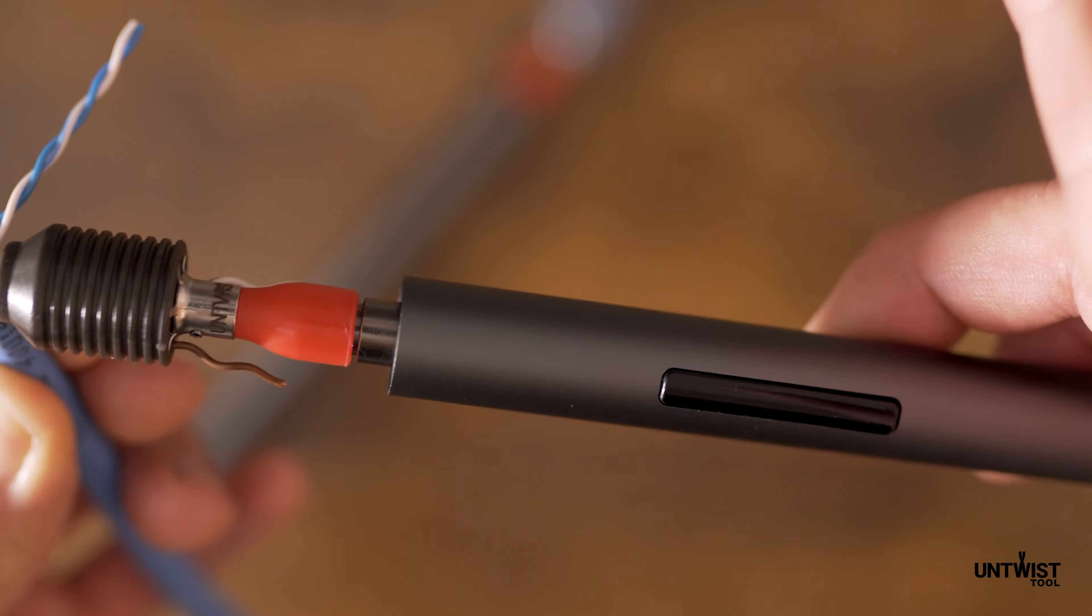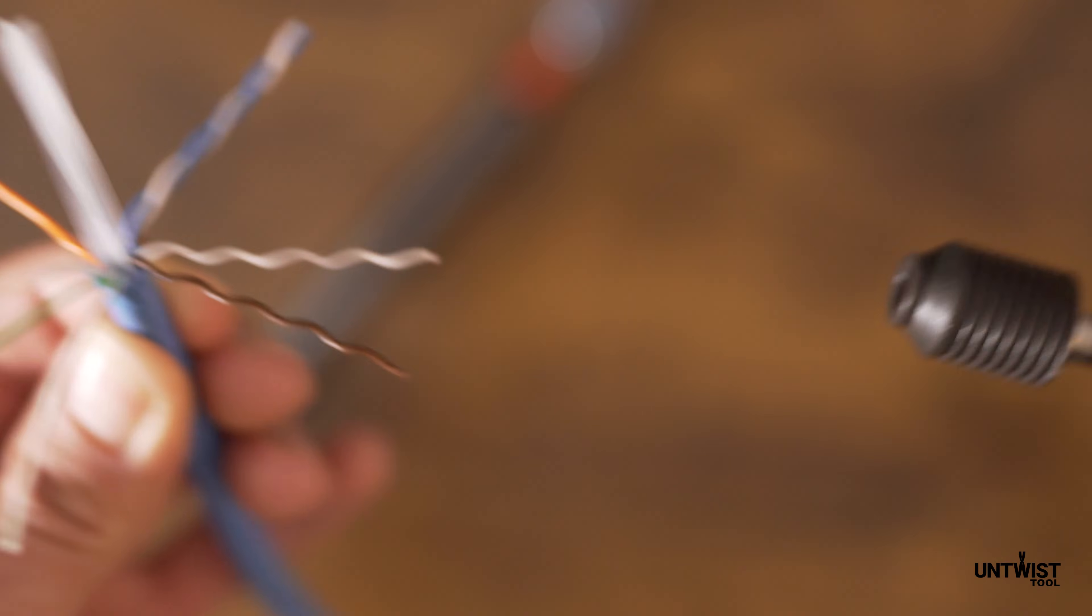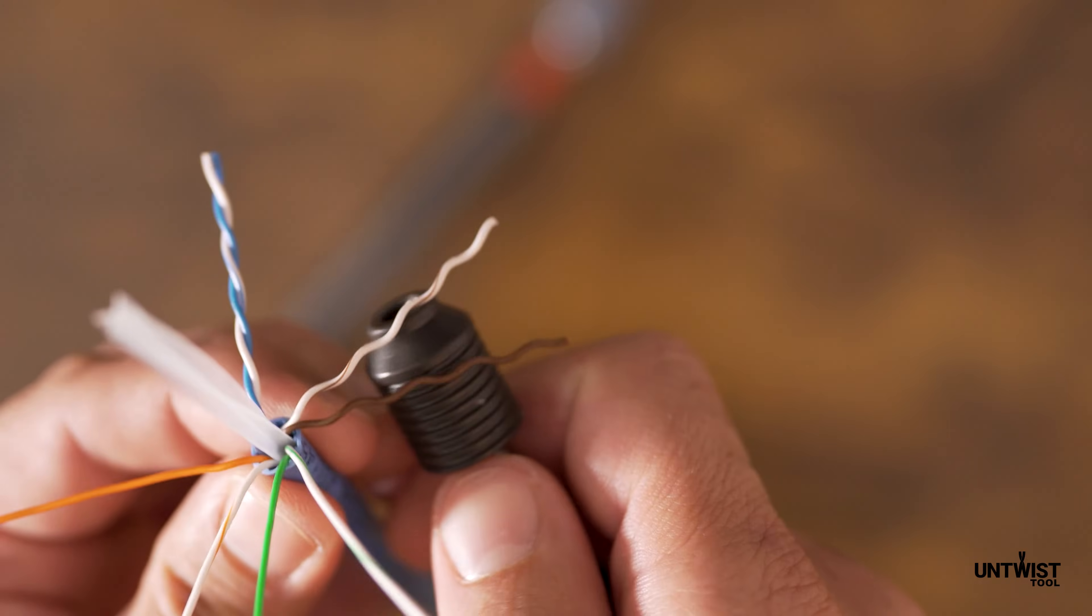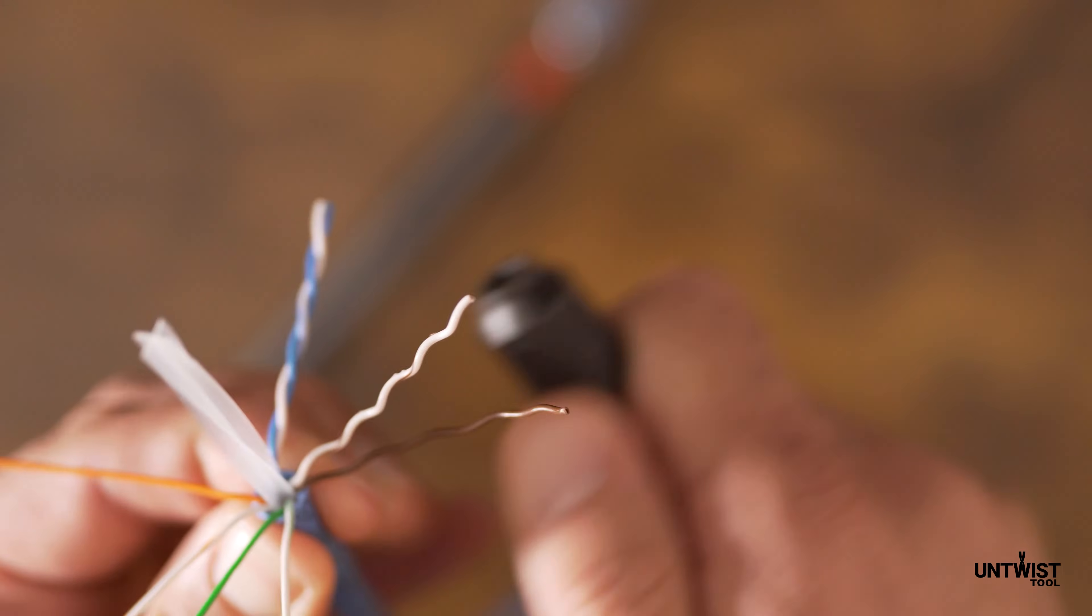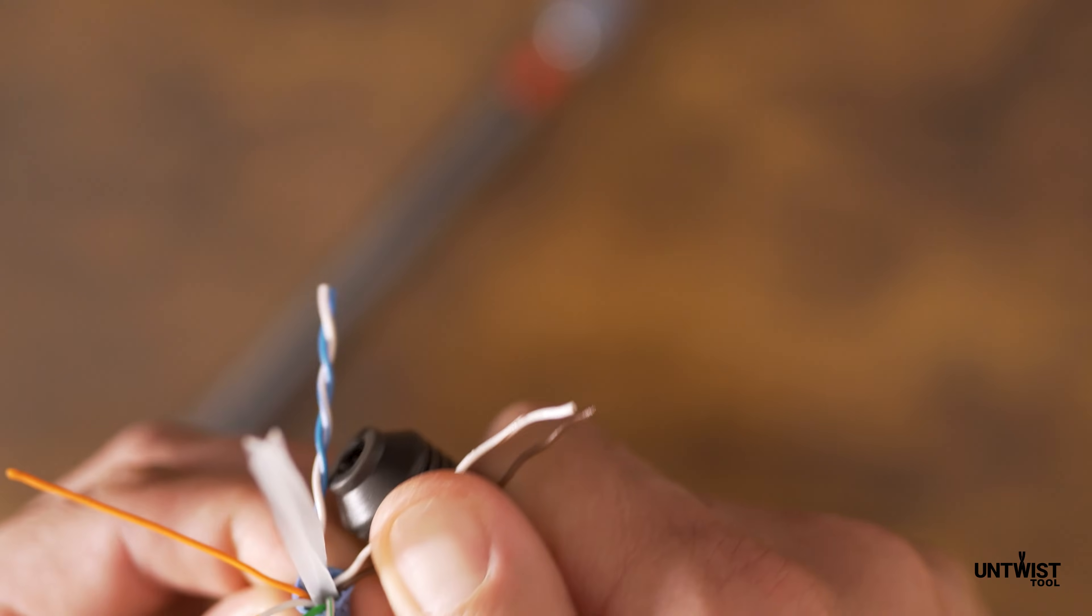As soon as you reach the bottom, release the button and pull the tool back. Use the grooves on the side to straighten the conductors. Repeat this process for all twisted pairs.